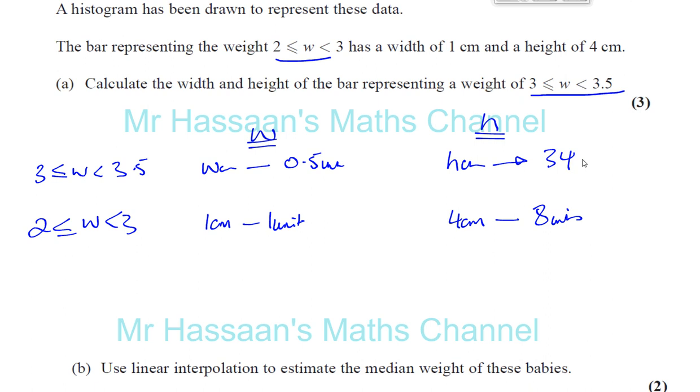So we can use a simple proportion. We can say for the width, W, the width of the bar is going to be basically 0.5, 1 times 0.5 over 1. And the height of the bar is going to be 4 times 34 divided by 8, just simple proportion here.